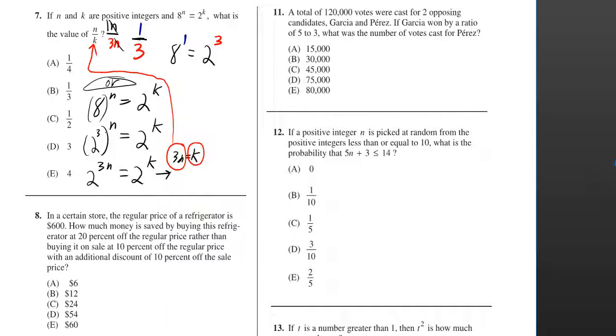That's kind of the problem right there, but in case you didn't realize that, you could keep going by saying that 2 to the 3 to the n is 2 to the 3n. You multiply the exponents when there's an exponent outside the parentheses. So you get 2 to the 3n is equal to 2 to the k.